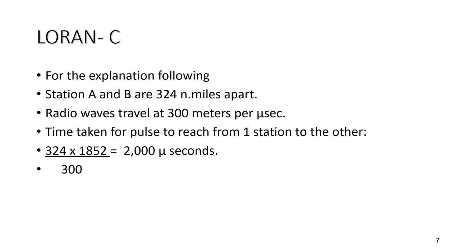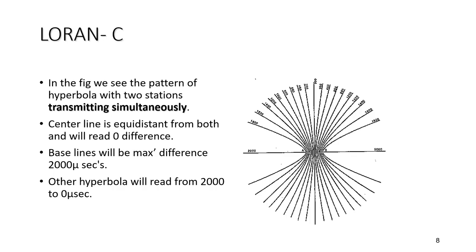To remove the ambiguity, the slave transmission is delayed by sufficient time for the master signal to be received throughout the entire coverage area before the slave transmits. A second slave is delayed even longer so that the first slave is received before the second, and so on. These delays are made up of two parts: the primary coding delay is the time taken for the master signal to travel along the baseline to the slave, and the secondary coding delay is the additional delay applied to each slave.